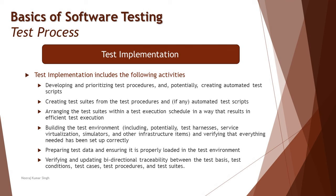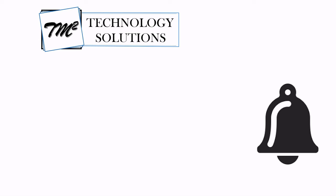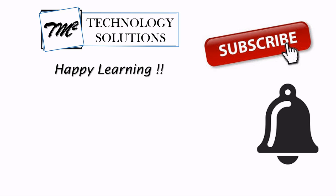Putting it all together, test implementation is about setting up the environment, getting ready, and doing cross-checks — making sure everything you need before kicking off execution is already in place. During execution, if you have to pause and do what should have been done before, it's considered a waste of time and a blocker for testing. So making sure you are all set up and ready for the execution phase is what we do in test implementation. That's all for this tutorial — feel free to comment below. Keep learning, keep exploring — thanks for watching and happy learning!